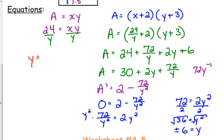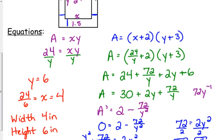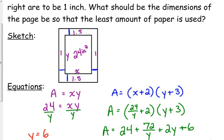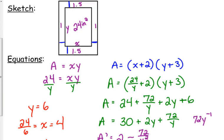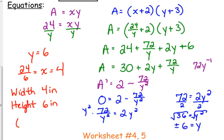So, if y is 6, then 24 over 6 gives us x, which means that it is 4. So our dimensions are a width of 4 inches and a height of 6 inches. For the printed space, let's look back. This is what should be the dimensions of the page. That's the printed area, 4 by 6, but the dimensions of the actual page would mean that we add 2 inches to the width and we add 3 inches to the height, so the actual page is 6 by 9 inches. So be careful with problems like that, that you recognize what dimensions they're actually asking for. The 4 by 6 is the printed area. It wanted the dimensions of the actual page.